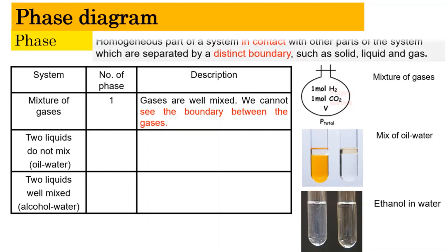So, what is phase? Phase is basically a homogeneous part of a system that is in contact with the other parts — for example, solid, liquid, and gases. If we have a mixture of gases, such as a combination of hydrogen gas and carbon dioxide, or the air that surrounds you, you cannot differentiate between one type of molecule and another. You cannot say this is oxygen, this is carbon dioxide, this is nitrogen — you cannot separate them. They exist as a homogeneous mixture and we cannot see the boundary between the gases. As a result, the number of phases for this situation is only one.